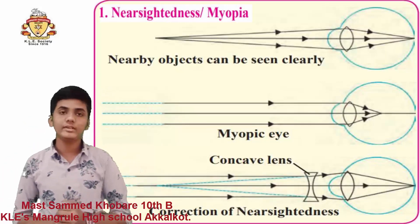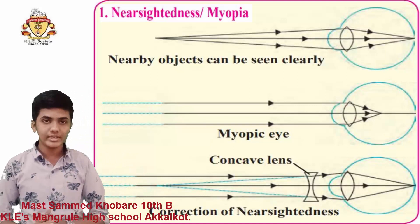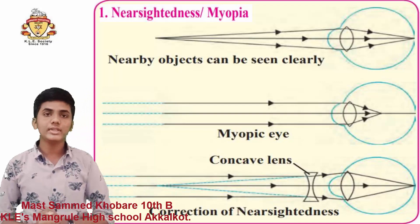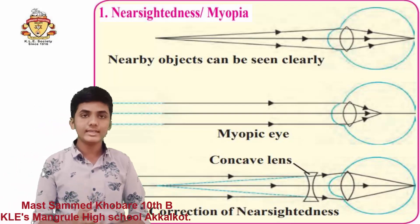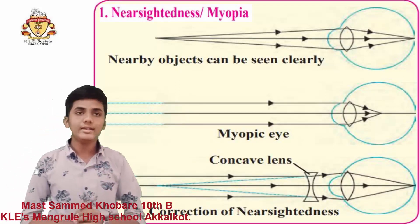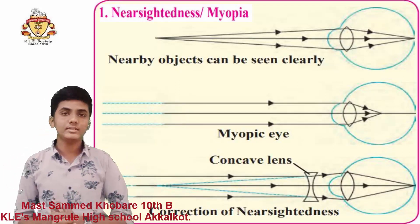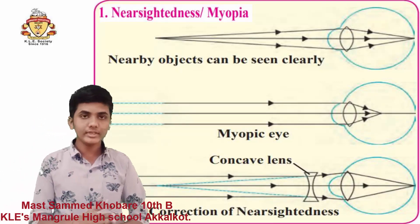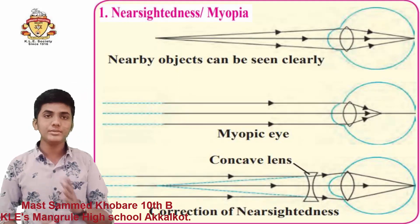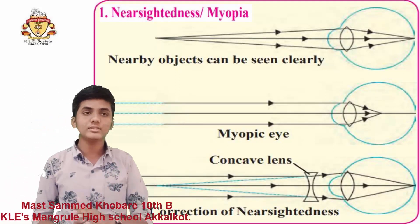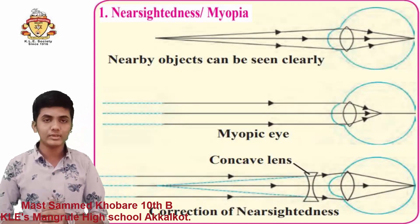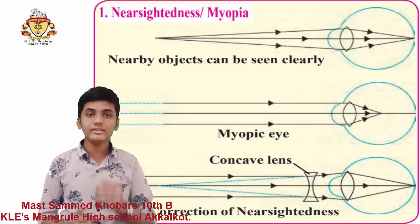There are two reasons behind this defect. First, the curvature of the cornea and lens increases so that the ciliary muscles near the lens do not relax and the converging power remains larger. Second, the eyeball elongates so that the distance between the lens and retina increases. This defect can be corrected by using spectacles with a concave lens of proper focal length. A concave lens has a negative focal length, so a negative power is required to correct this defect.